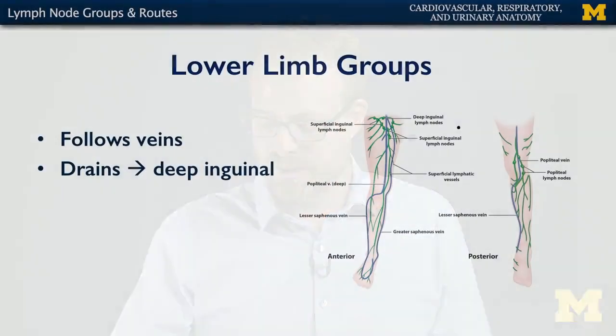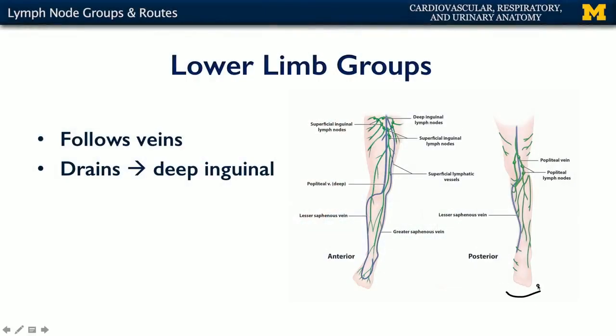For the lower limb, it's not much more complicated than that. We still have lymph vessels and nodes following channels. Here's a nice posterior view of the lower limb, and we can see nodes in the popliteal fossa clustered around the popliteal vein.